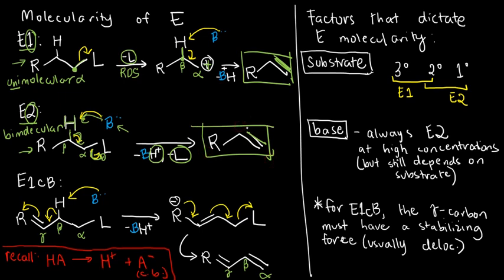And just like SN1, SN2, SN1 has two steps, E1 also has two steps. Just like SN2, which has one step, E2 has one step. So, you see a lot of parallels there, because the molecularity, by definition, was not different from before.